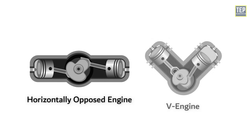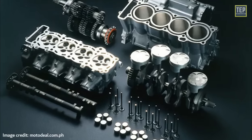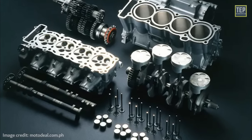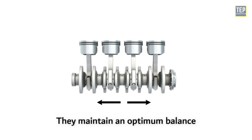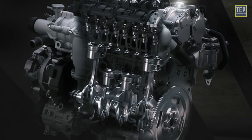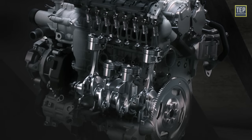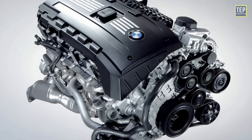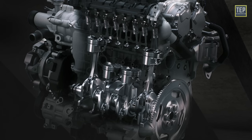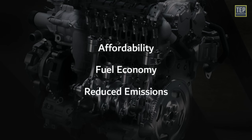A straight engine is considerably easier to build than a horizontally opposed or V engine because the cylinder bank and crankshaft can be milled from a single metal casting, requiring fewer cylinder heads and camshafts. There is an even distribution of weight, hence they maintain an optimum balance. These are smaller in size and therefore need relatively small space and are comparatively cheaper. BMW is famous for its high-performance inline six cylinder engines. Four cylinder inlines have been widespread in recent years due to their affordability, fuel economy, and reduced emissions.